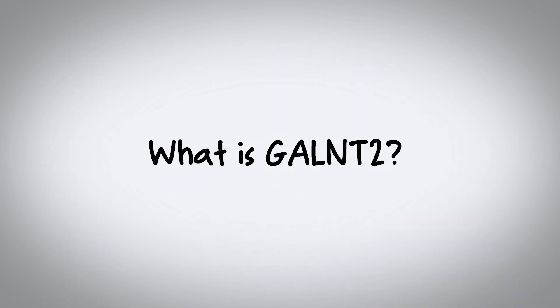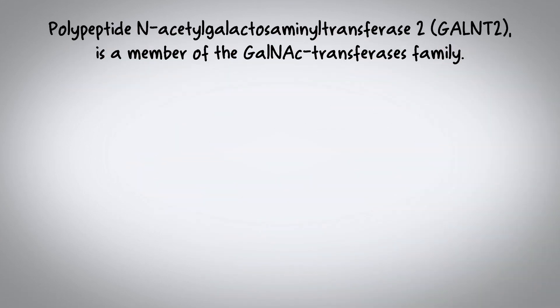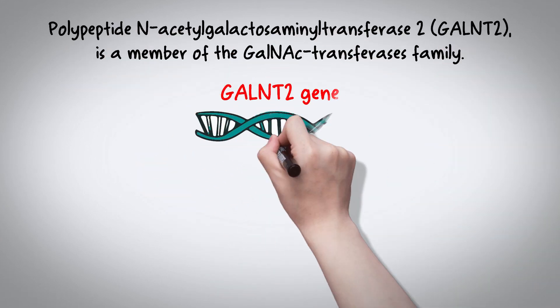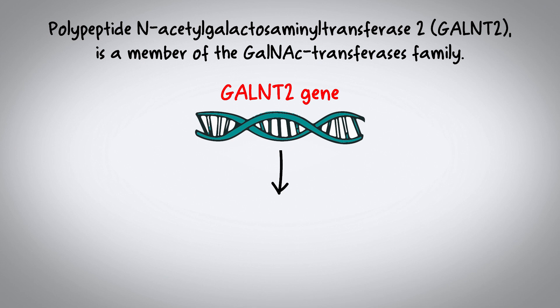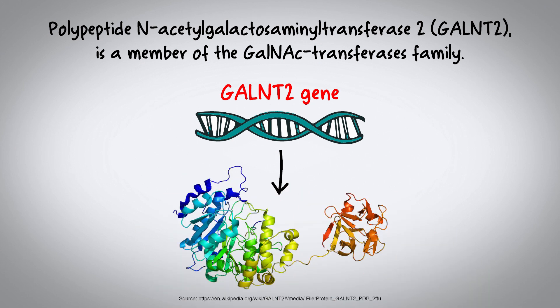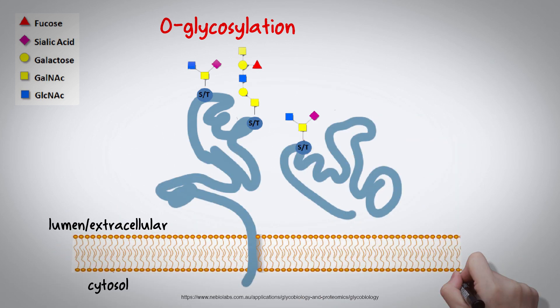What is GALNT2? The GALNT2 gene encodes the protein polypeptide N-acetyl-galactosaminotransferase-2, which is a member of the GalNAc-transferase family. This protein specifically attaches the sugar N-acetyl-D-galactosamine to serine and threonine residues on proteins in a process known as O-glycosylation.